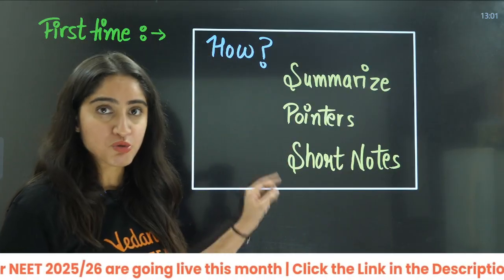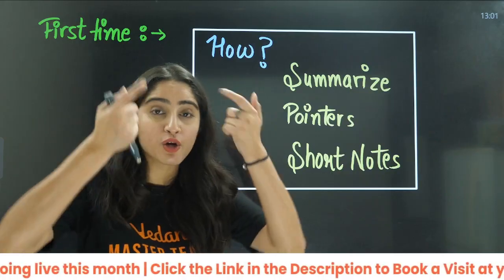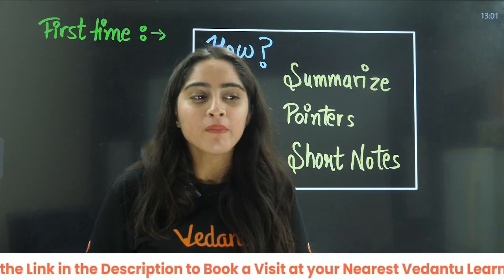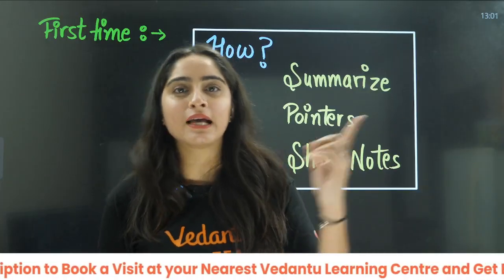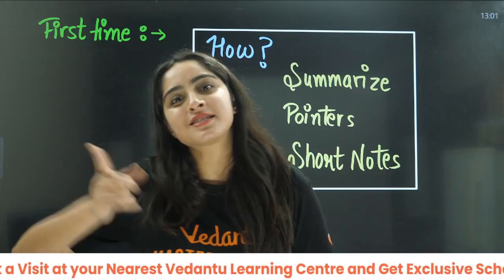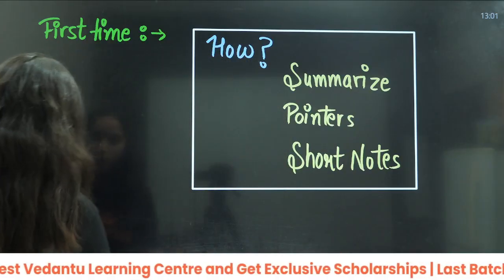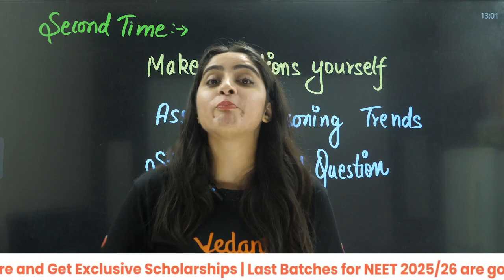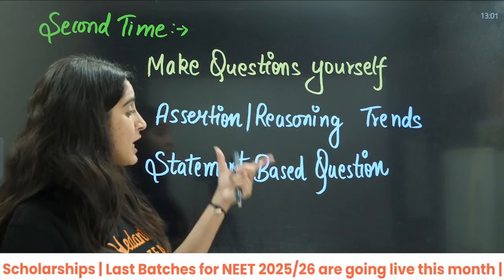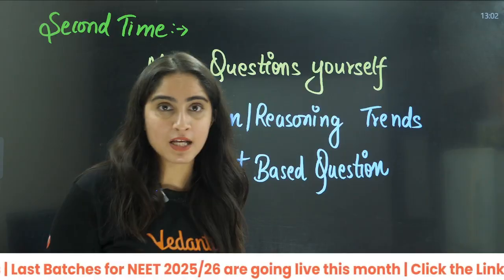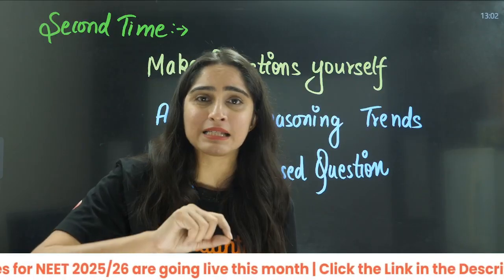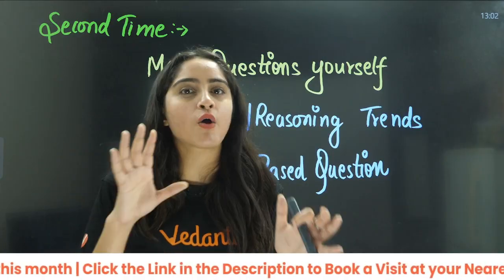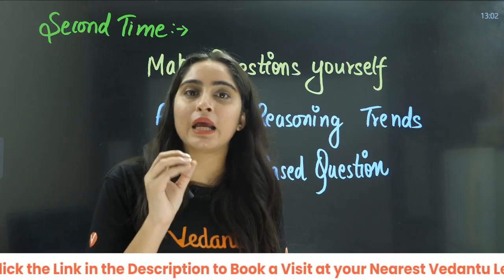After that, the second time you read, you need to recall it yourself — just from the notes. Once the first NCERT reading is done, on the second reading you need to form the questions yourself: assertion-reasoning questions, statement-based questions. Write them down on the NCERT or another notebook. Make at least 20 to 30 questions from each chapter — that is very important.